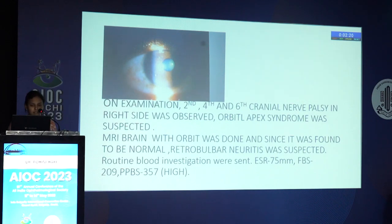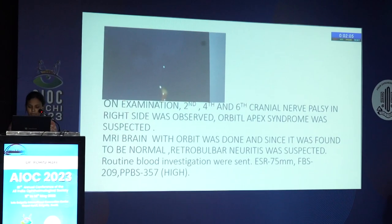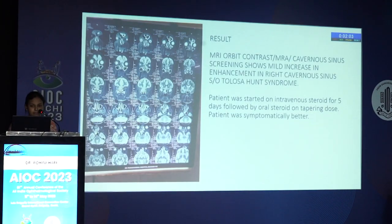On examination, second, fourth, and sixth cranial nerve palsy was observed in the right eye, so orbital apex syndrome was suspected. MRI brain with orbit was done and since it was normal, retrobulbar neuritis was suspected. Routine blood investigations were sent — ESR and blood sugars were high.